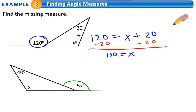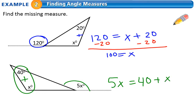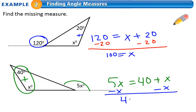Remember, the exterior angle is equal to the sum of the two opposite interior angles. Because 40 and 5x are not like terms, I need to subtract x. So 4x equals 40, or x equals 10.